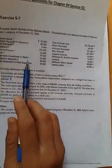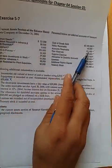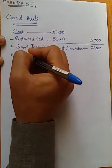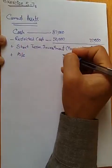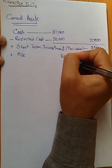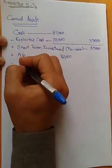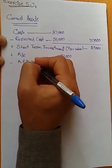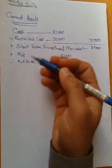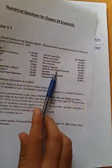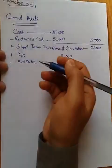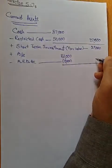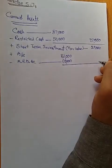After short-term investments we go to accounts receivable. We have accounts receivable of $161,000. From every accounts receivable we subtract the allowance for doubtful accounts if we have any. The allowance for doubtful accounts is $12,000, so we subtract $12,000. That gives us $161,000 minus $12,000 equals $149,000.